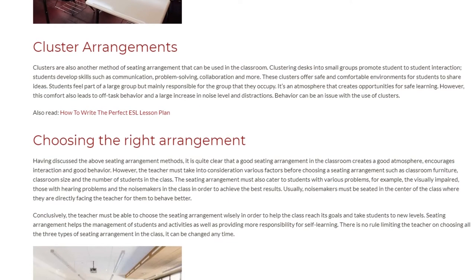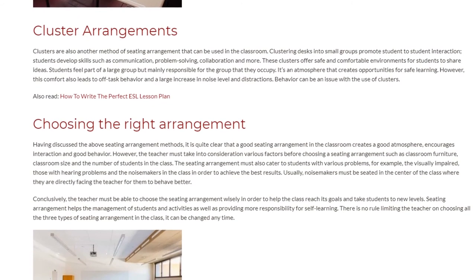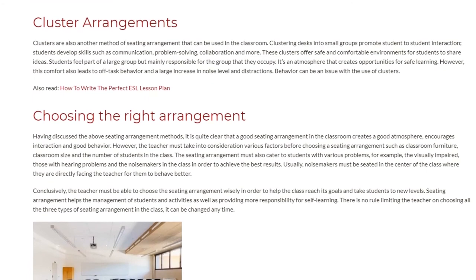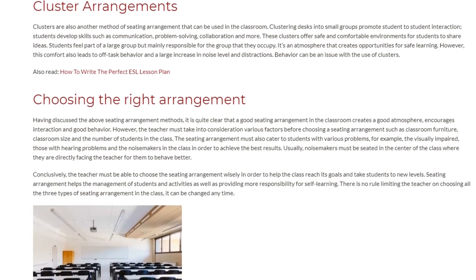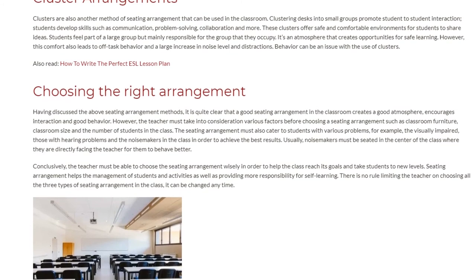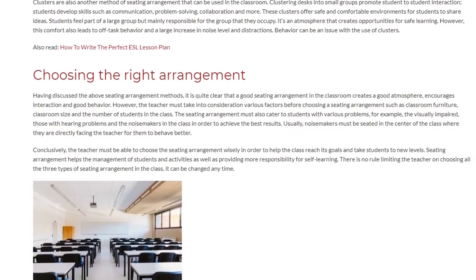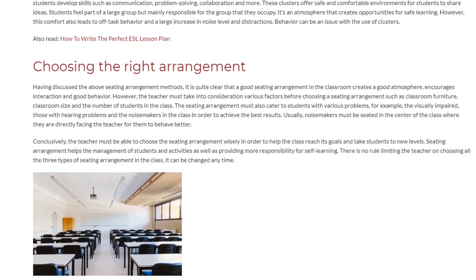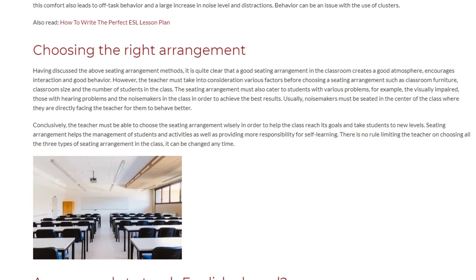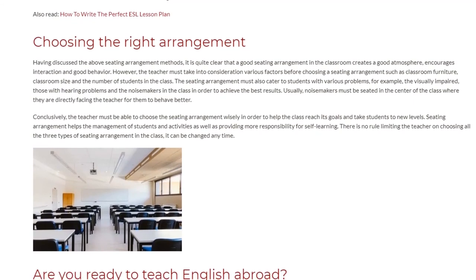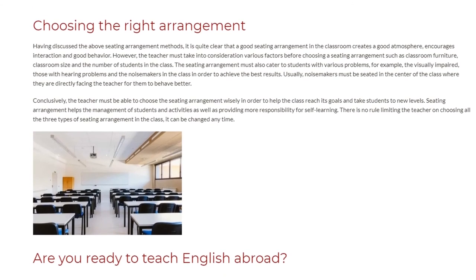Having discussed the above seating arrangement methods, it is clear that a good seating arrangement creates a positive atmosphere, encourages interaction, and promotes good behavior. However, the teacher must consider various factors before choosing a seating arrangement, such as classroom furniture, classroom size, and the number of students. The arrangement must also cater to students with various needs, such as the visually impaired, those with hearing problems, and noisemakers in the class. Usually, noisemakers should be seated in the center of the class, directly facing the teacher, to encourage better behavior.